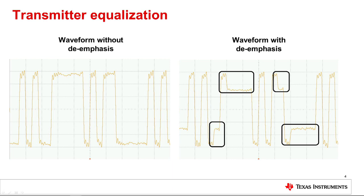The high frequency components of the signal at higher data rates are more susceptible to distortion. This can cause bit errors. Emphasizing the high frequency content at the transmitter helps produce a signal at the receiver which more closely resembles the original transmitted signal. A USB redriver can compensate for anticipated channel loss by applying transmitter equalization by two methods: pre-emphasis or de-emphasis. Pre-emphasis is used to increase the high frequency signal components which are more susceptible to noise, accomplished by increasing the level of the first transmission bit. De-emphasis is used to increase the high frequency content by lowering the level of all bits except the first transition bit.